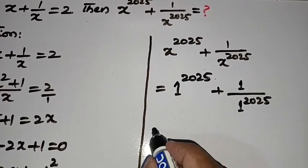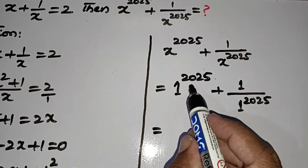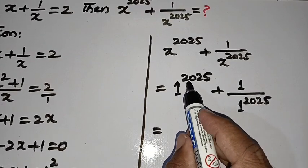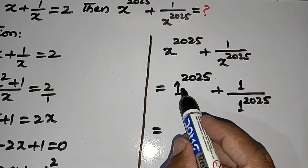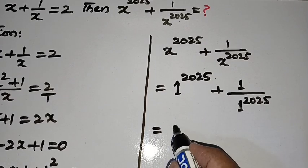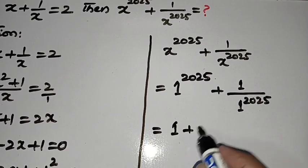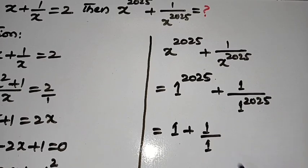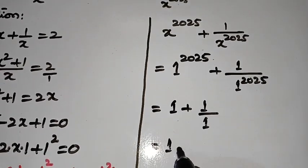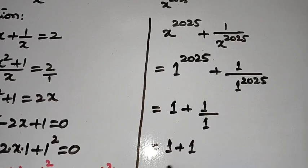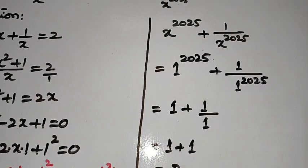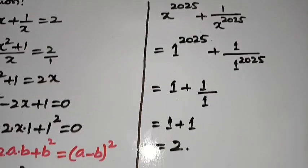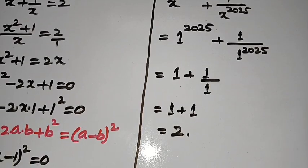We know that when 1 is multiplied any number of times, we get 1. So 2025 times when 1 is multiplied, 1 into 1 into 1, we get 1. So this is 1 plus 1 divided by 1, which is also 1. We have 1 plus 1 by 1 is 1. 1 plus 1 is 2. So the value of x to the power of 2025 plus 1 by x to the power of 2025 is 2.